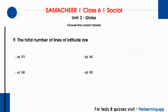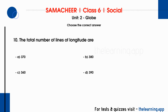Question 9: The total number of lines of latitude are. Options are A. 370, B. 380. Question 10: The total number of lines of longitude are. Options are A. 370, B. 380, C. 360, D. 390. Correct answer is C. 360.